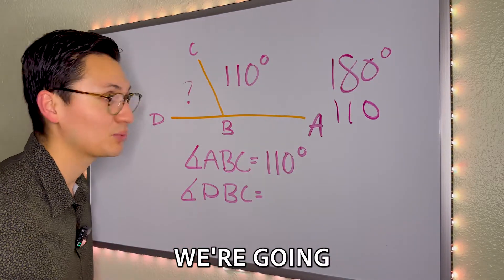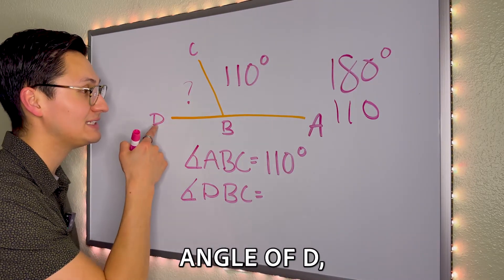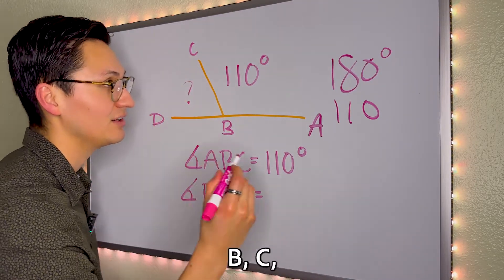The angle that we have is 110 degrees. So if we subtract, we're going to figure out the angle of D, B, C. So let's do that.